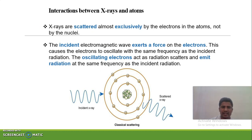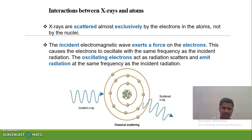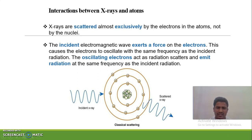The interaction of X-rays and atoms can be explained by Bohr's atomic model. Whenever you want to study the crystal structures of molecules, the molecule is considered to consist of small atoms. Each atom consists of different electrons and a nucleus at the center. Whenever X-rays interact with these atoms, X-ray scattering can take place.